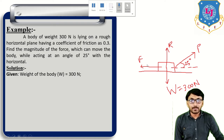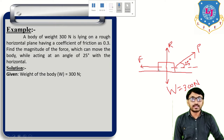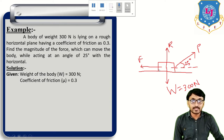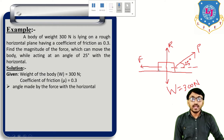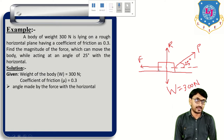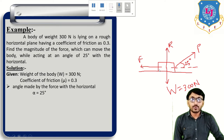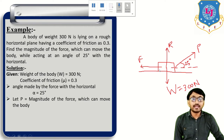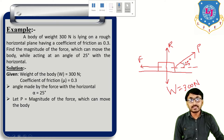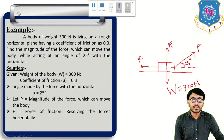Given data: first, weight of block = 300 Newton; second, coefficient of friction = 0.3; third, angle made by the force with the horizontal = 25 degrees. Here P denotes the external force and F denotes the force of friction.